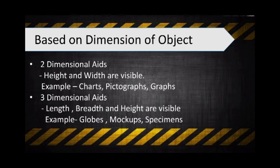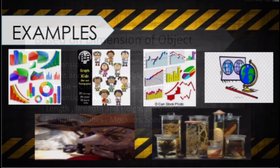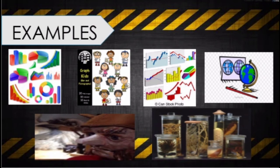Based on dimension of objects: two-dimensional aids refer to materials with length and width — this material is flat and not designed to provide depth. Three-dimensional aids refer to materials that have length, width, and height, and are composed of various shapes like cuboids, cones, cubes, spheres, models, dioramas, and realia. Examples of two-dimensional and three-dimensional aids include charts, pictographs, graphs, globes, mock-ups, and specimens.